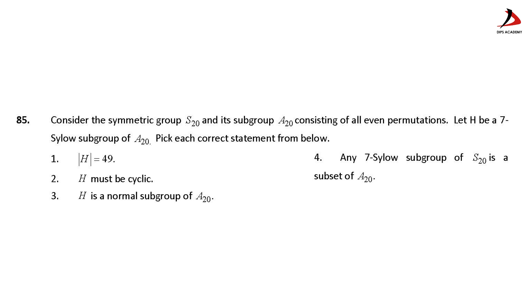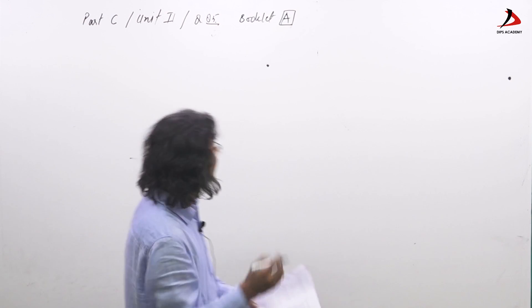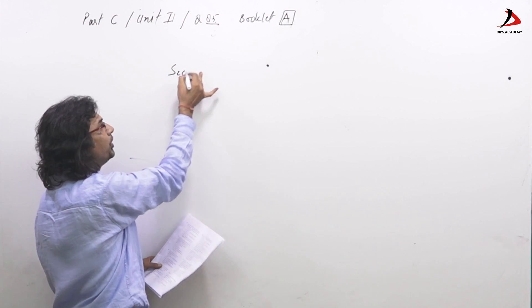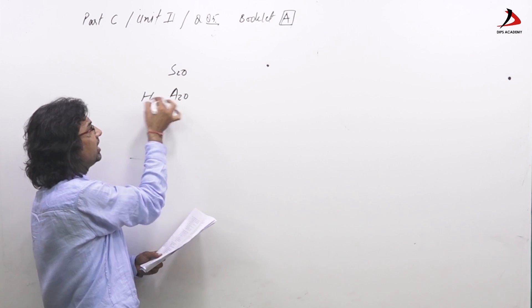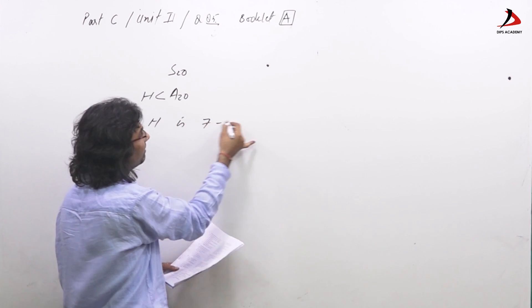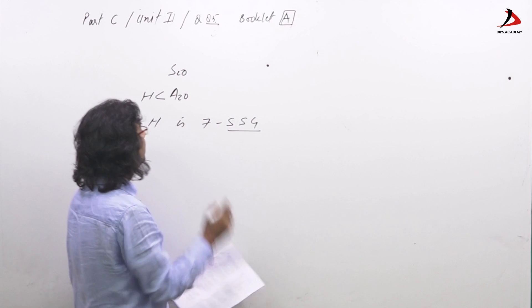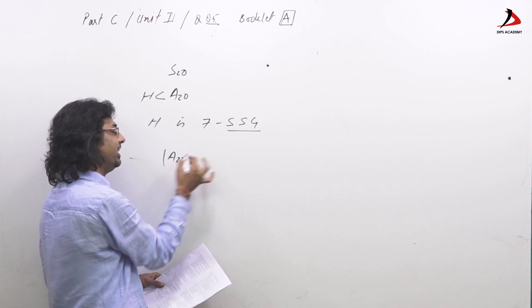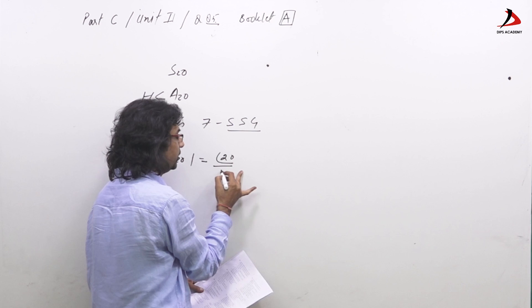And then you have to choose correct statements. See, given S_20 and A_20, and H a subgroup of A_20 where H is 7-SSG, that is Sylow subgroup. Now, order of A_20 is 20 factorial by 2.